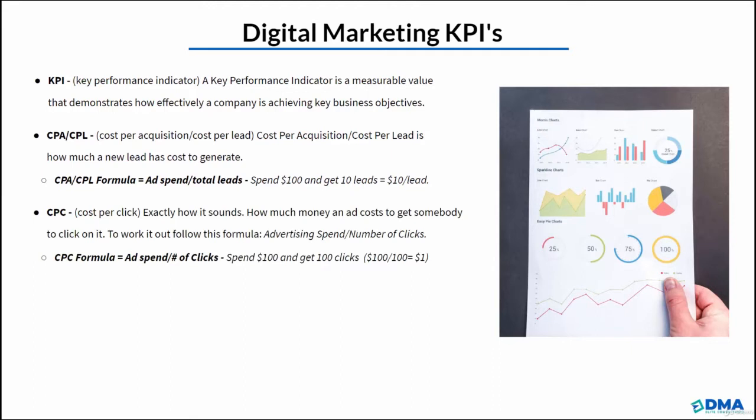Next we have cost per click, or CPC. This is exactly how it sounds — how much money is spent to get somebody to click on our ad. The formula is ad spend divided by number of clicks. For example, if we spend $100 and we get 100 clicks, that's $100 divided by 100, which equals $1 per click.